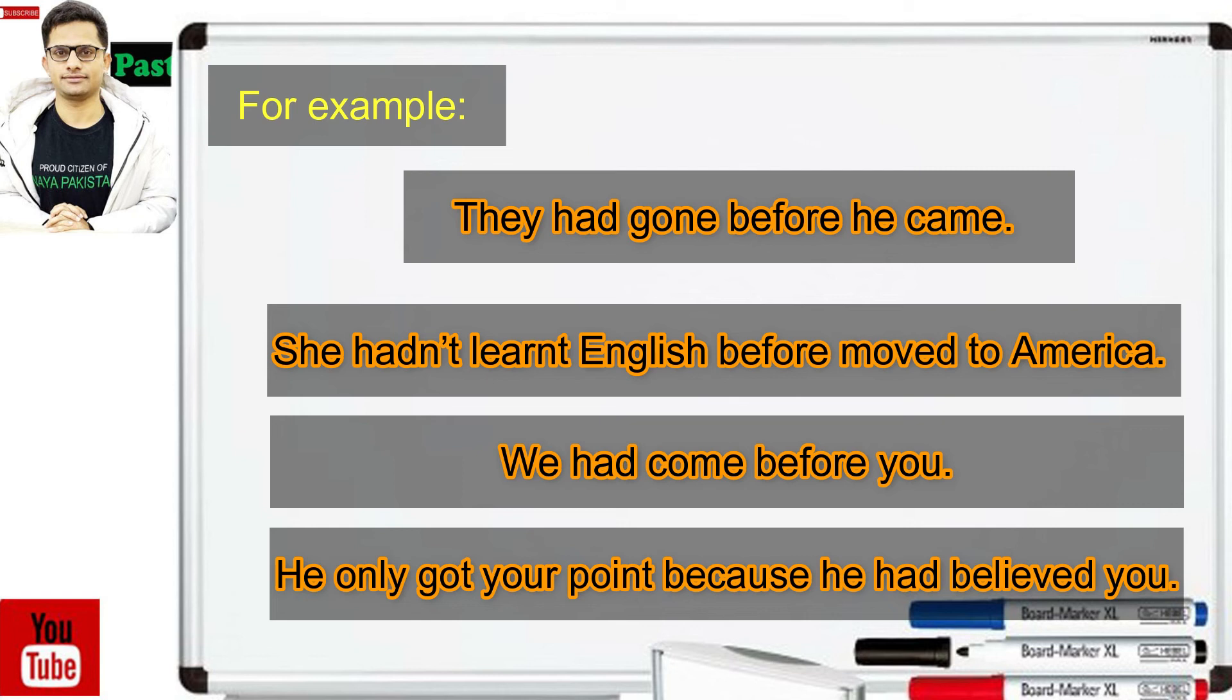So don't be confused which event is mentioned first. یہاں پر جو first event mentioned ہے وہ ہے he only got your point یہ past simple tense کا ہے کیونکہ یہ event جو ہے یہ first action ہے اور second action یہاں پر ہے past perfect tense کا. So don't be confused between both clauses.